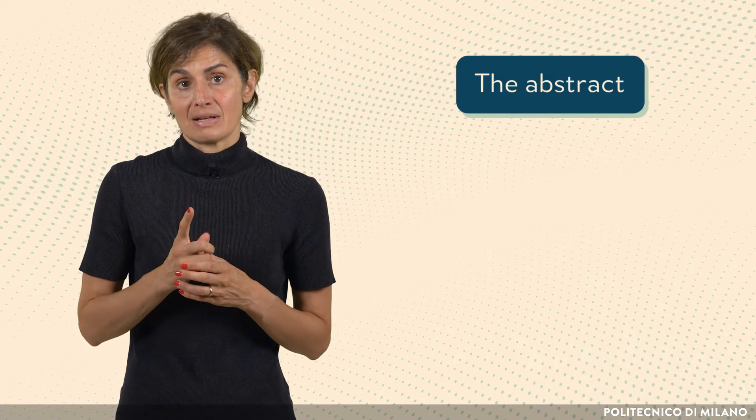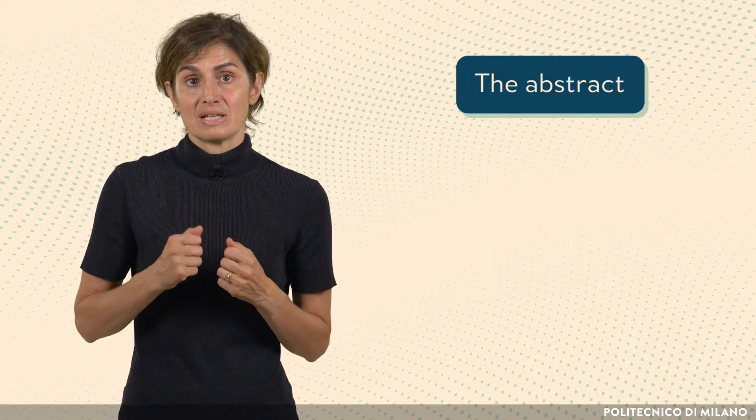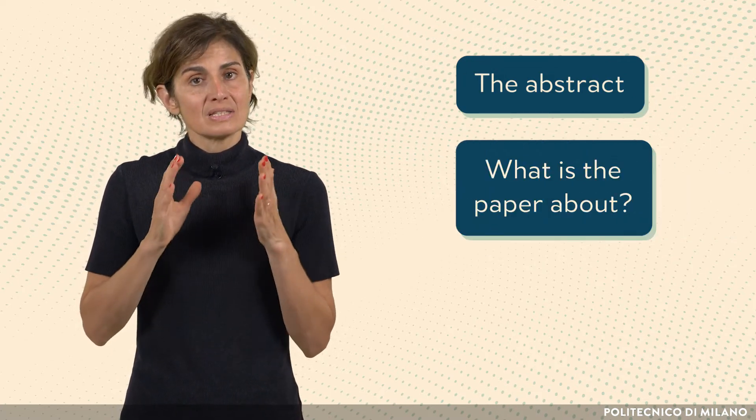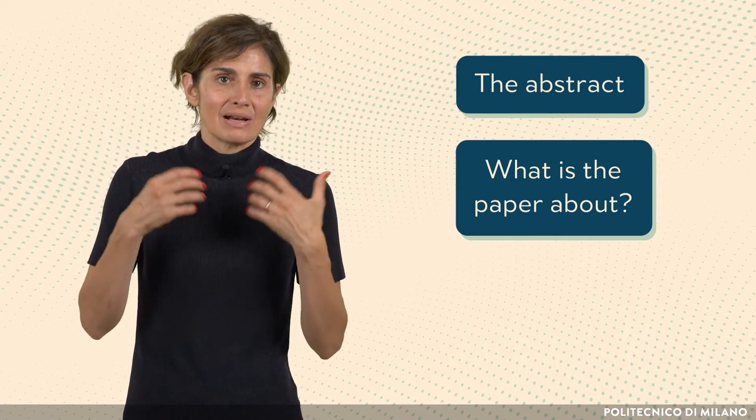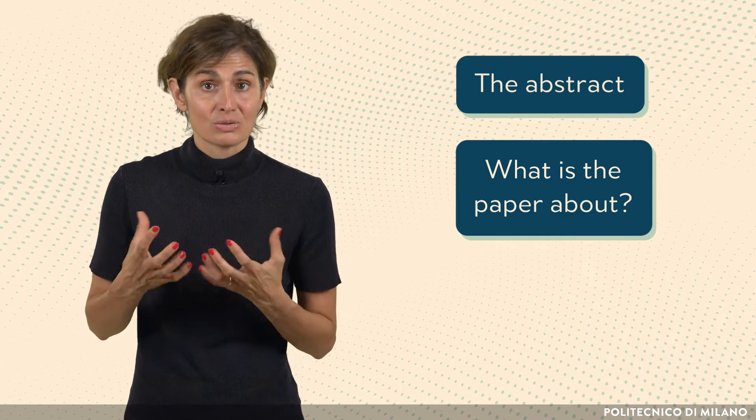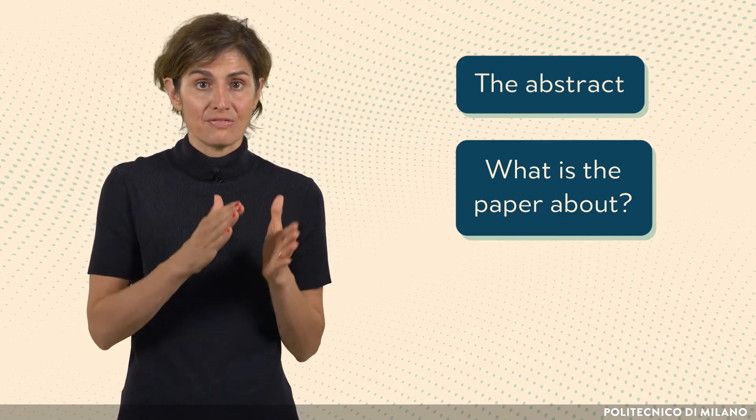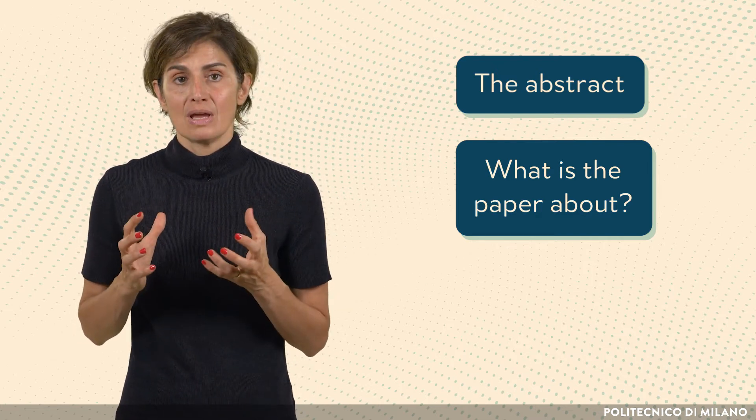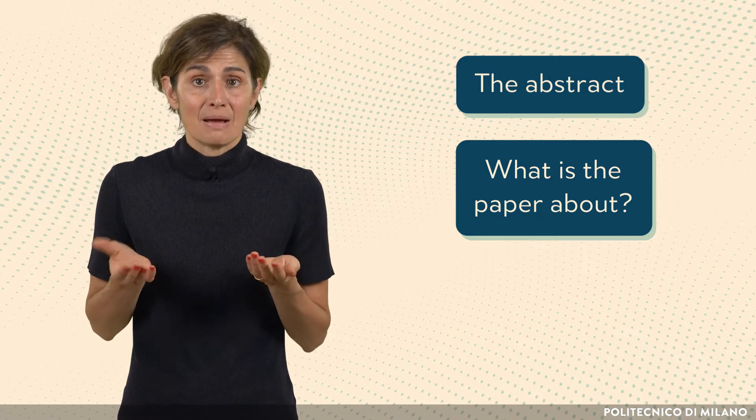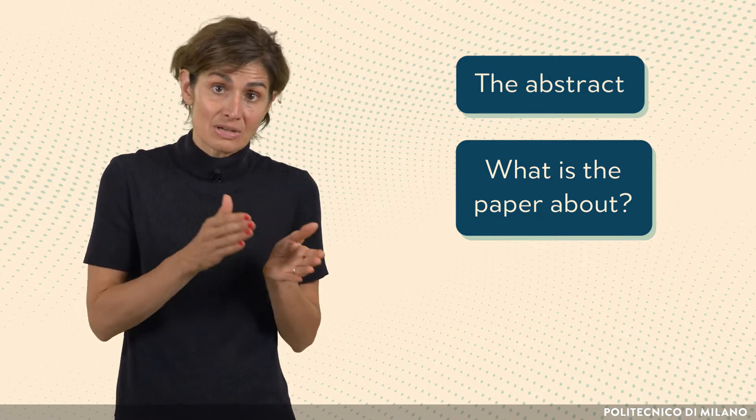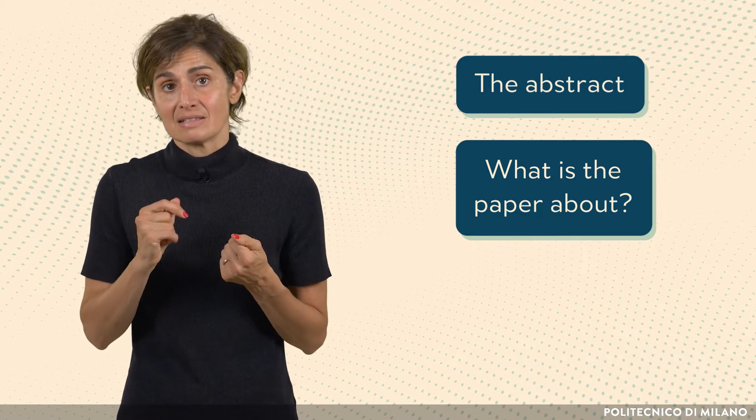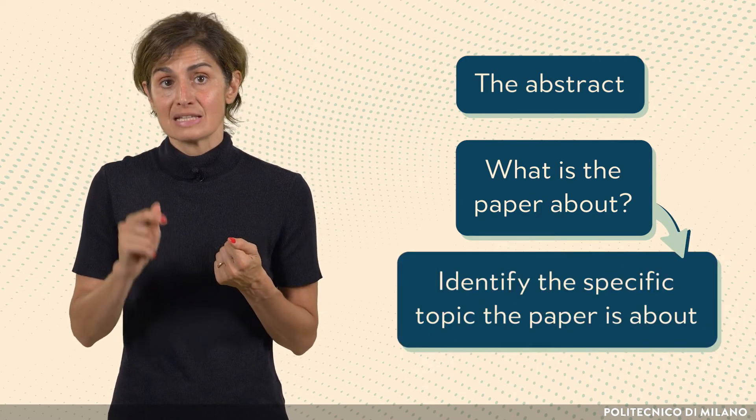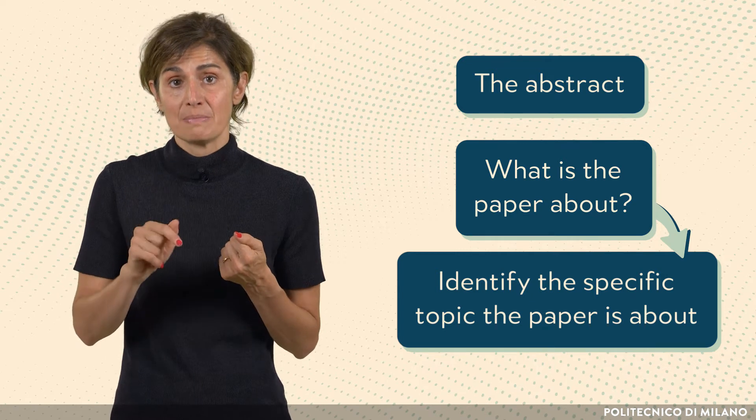Start from the abstract, asking yourself these questions. What is the paper about? Naturally, the general theme, or at least the sector, should already be known because they are defined by the publication venue. We will hardly find a bioengineering article at an educational technology conference, of course, but having said that, it is important to identify the specific topic the paper is about.